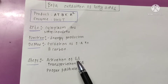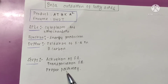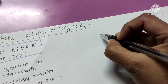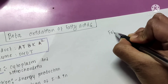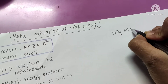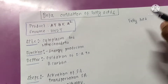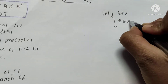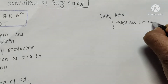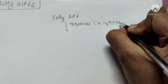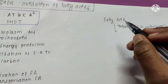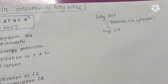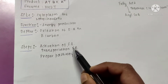The pathway can be difficult to learn, but we will make it easy today. The steps involved are: activation of the fatty acid, transportation of the fatty acid, and the proper pathway. Activation is done by thiokinase in the cytoplasm, producing the activated fatty acid called acyl CoA.